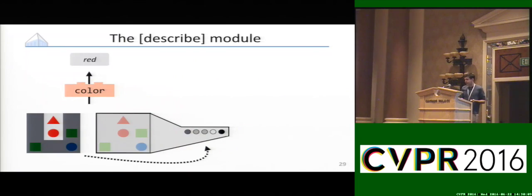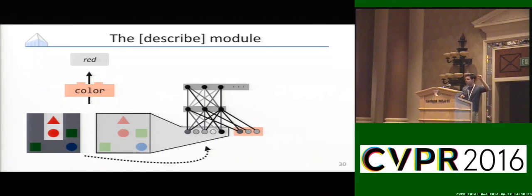This works in much the same way as the find module. We start by taking this input attention that's being passed up from lower in the tree, and use it to compute a weighted average over all of the different region-specific feature vectors that we have in our image, giving us a pooled feature vector corresponding to the attention. Once again, we're going to concatenate that together with a module-specific parameter vector that's going to determine the specific behavior we get out, and pass that through a multilayer perceptron where our last layer corresponds either to a distribution over answers directly or some kind of representation of an answer.